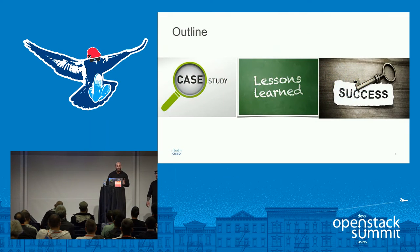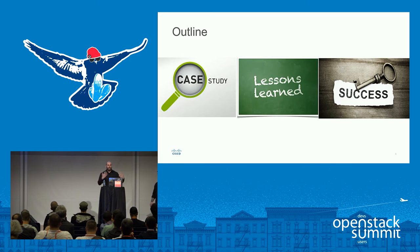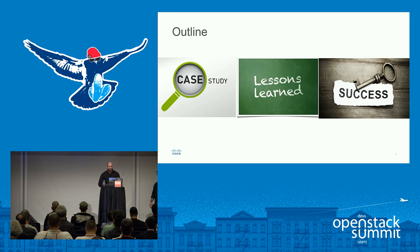We have three case studies of companies that have successfully or unsuccessfully deployed private clouds. We went to customers and people we've worked with in the past, interviewed them, and asked: what were you trying to do, what didn't work, and what could you have done differently? We'll take those case studies and extrapolate lessons learned, and give you keys to success — what things do you need to do to minimize failure and maximize success in deploying OpenStack.